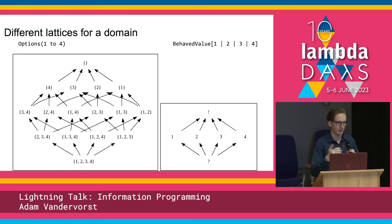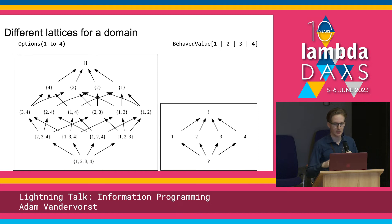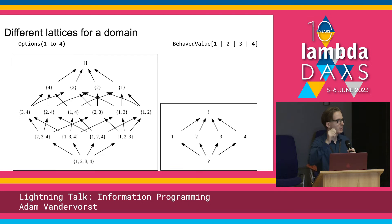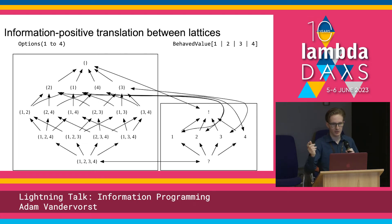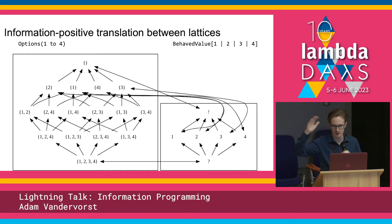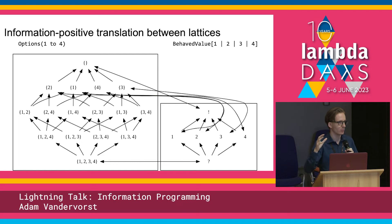We can have different lattices. On the left-hand side you can see the options 1-through-4 lattice, which has as a bottom element — instead of missing — all possible options. By removing options, you increase the information about the problem. We can translate between these lattices using antitone Galois connections — a scary name, but it basically means that information from one lattice can transfer to information on another lattice.